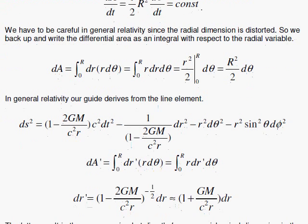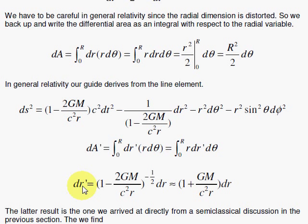So what I'm going to do here is set up my dr' as the distortion factor here times dr. Notice that this is here in the denominator, so there's a minus sign here, and I'm taking the square root, so I have minus one half. Doing a Taylor series expansion, when you have 1 minus a small quantity or plus a small quantity to the nth power, it's simply 1 plus or minus that small quantity times n.